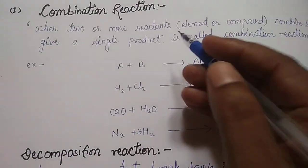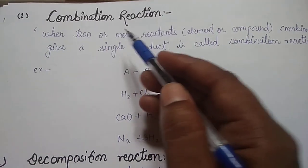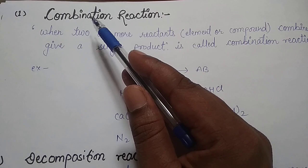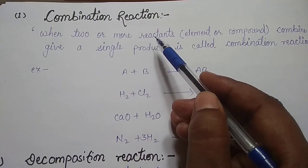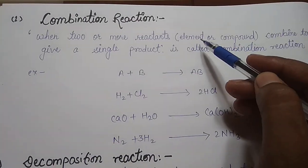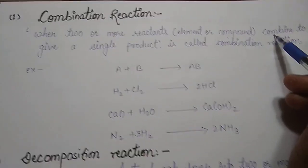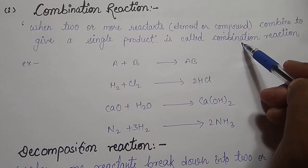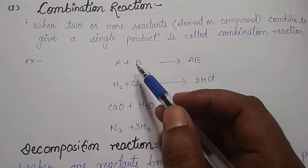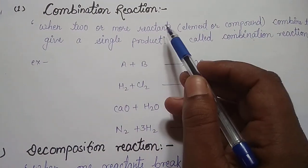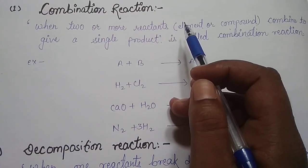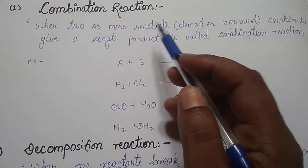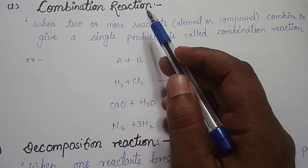First, combination reactions. Combination means adding. When two or more reactants — either elements or compounds — combine to give a single product, that is called a combination reaction. It means that when two or more reactants, whether elements or compounds, combine and give a single product, that will be a combination reaction.